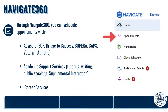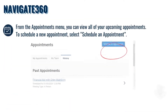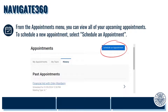From your mobile app, select the menu option for appointments. From the desktop, you're going to select appointments from the menu on the left side of your screen. From the top right of this screen, select Schedule an Appointment.